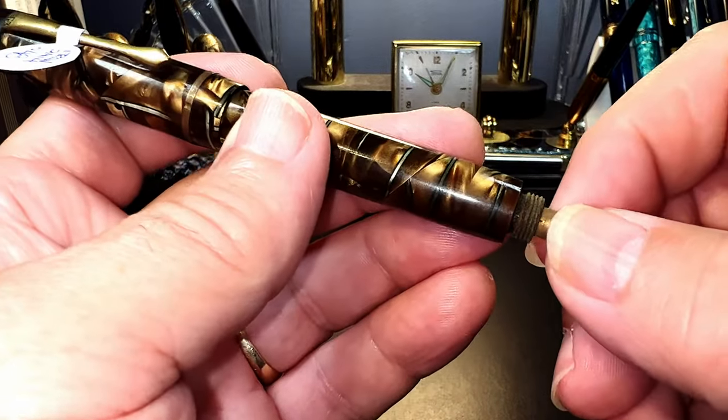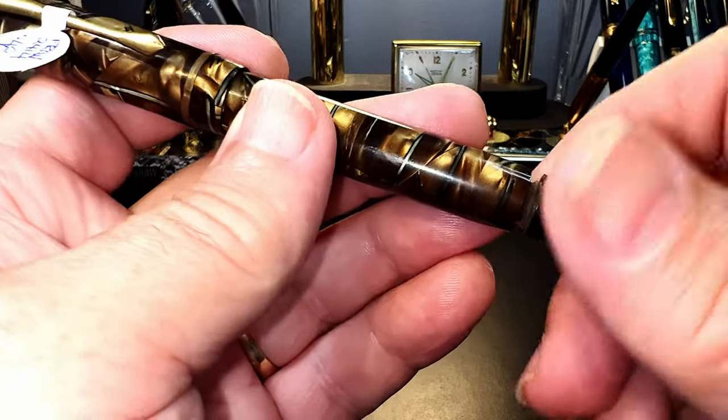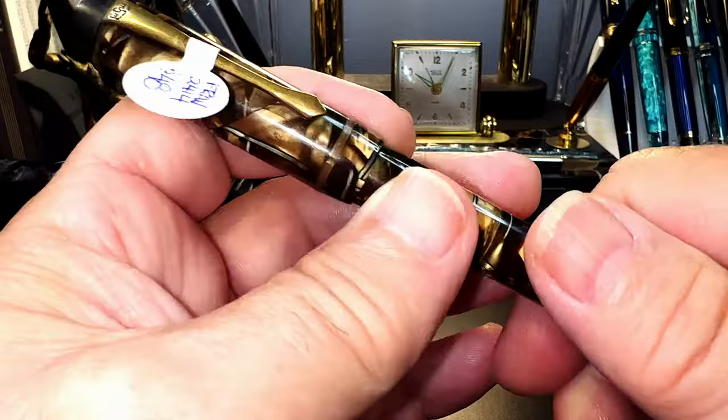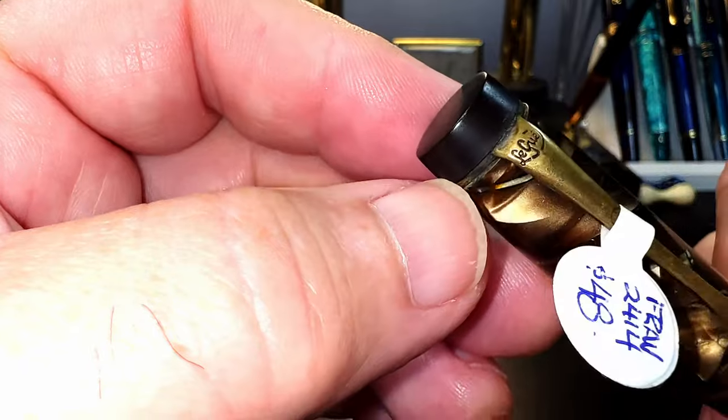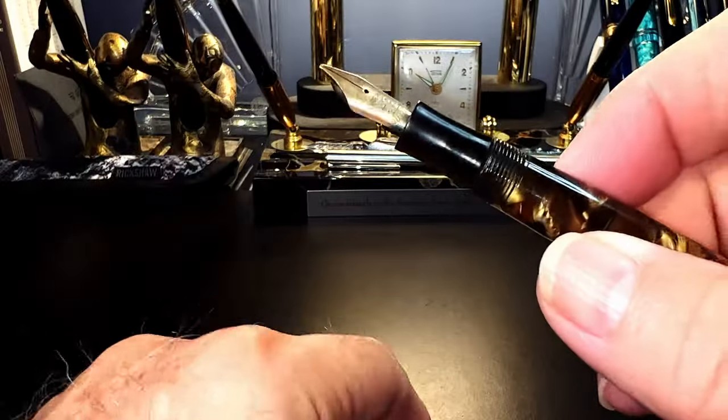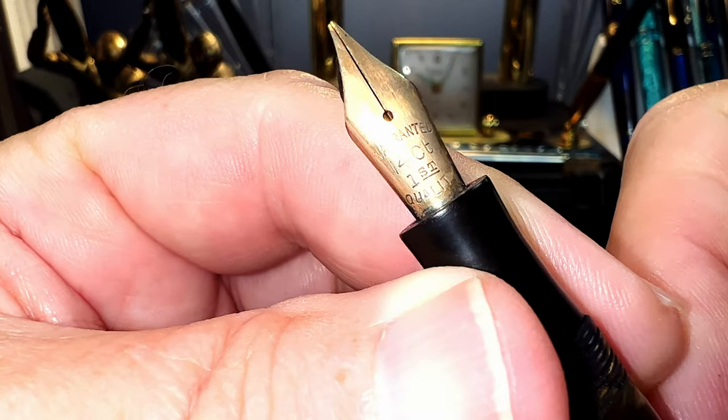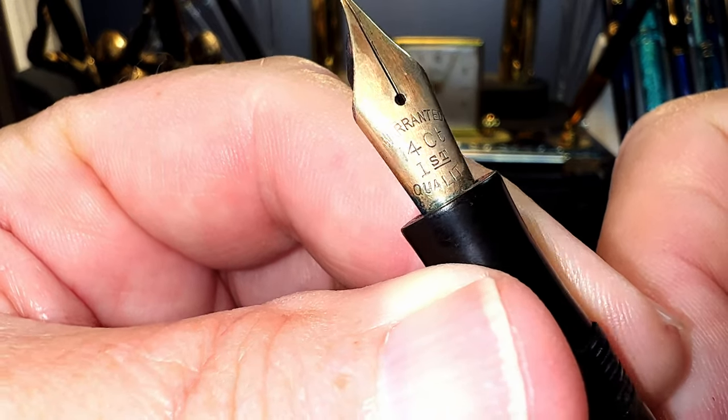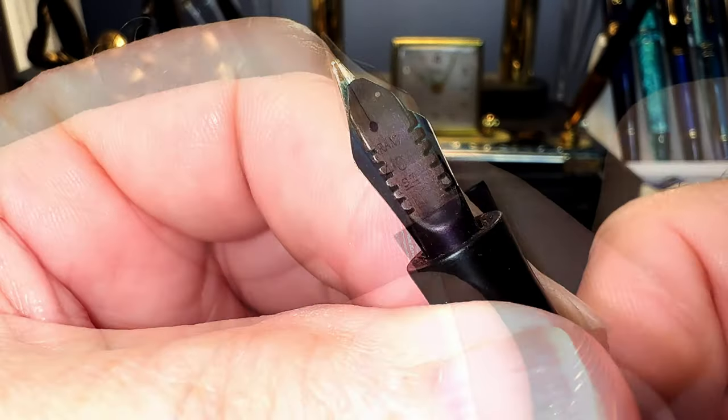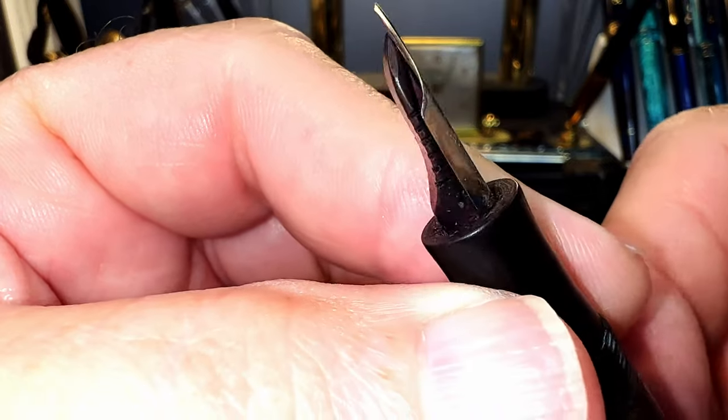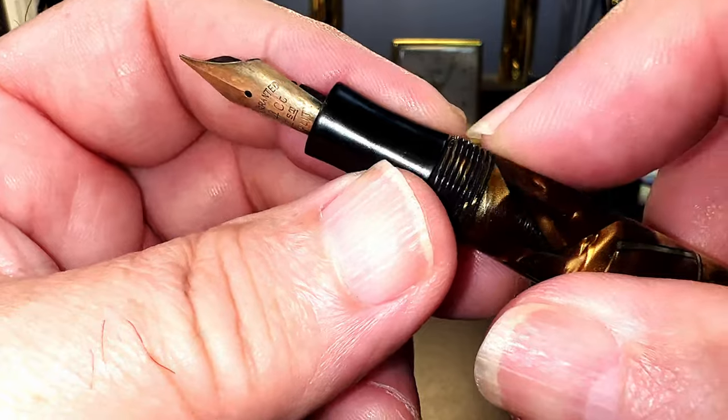And it has a blind cap which comes off. And it's a button filler. I'm not even going to try to move it yet until I soak it. It feels rusty as well. And that finial looks like it's fallen off. The clip is kind of off center. And it has a, indeed, 14 carat gold. It says First Quality 14 CT Warranted Ebonite Feed right there. It's a little bit off. The whole thing is solid with old ink.